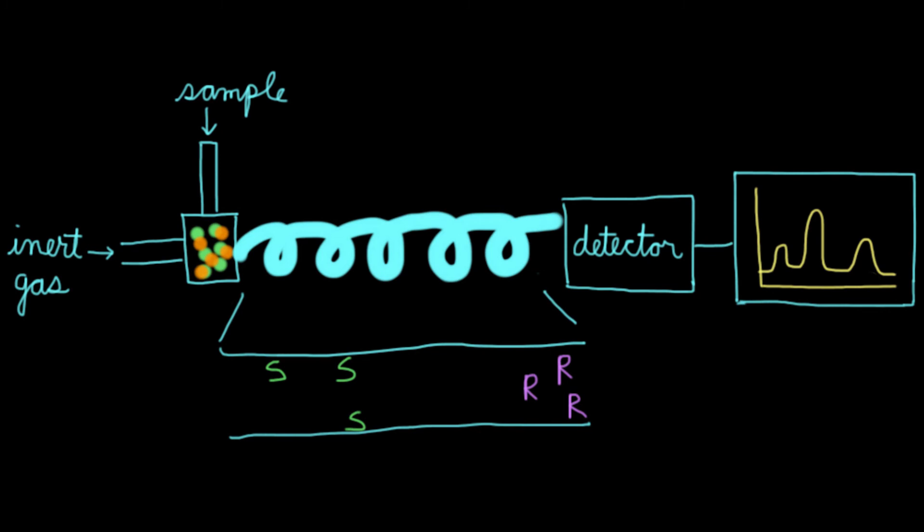So there are actually a number of other ways you can separate out enantiomers, but those tend to be much more complicated. These are just two of the common ways you can do it. And in both of them, whether you're doing column chromatography with a solid stationary phase, or gas chromatography with a liquid stationary phase, the important thing to remember is that your stationary phase should be chiral and bind to the enantiomer that you want.